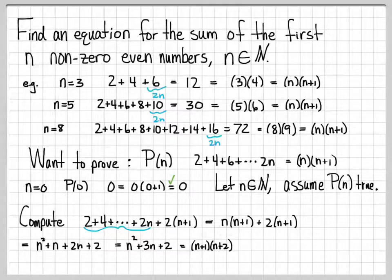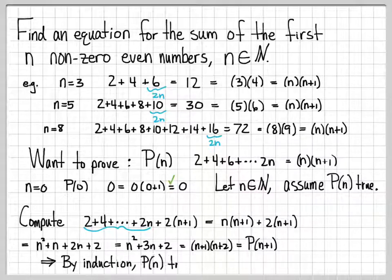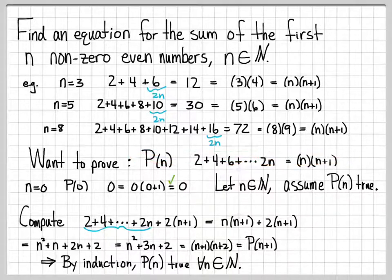Now this is very clear that this is written as P of n plus 1. P of n plus 1 is the statement P of n with all the n's replaced by n plus 1's. I've replaced this n with an n plus 1, and this n with an n plus 1 to give me n plus 2. This is in the form of P of n plus 1. Starting with this computation and using the assumption, I've shown that P of n plus 1 is also true. So by mathematical induction, we have that P of n is true for all integers n. We are done.